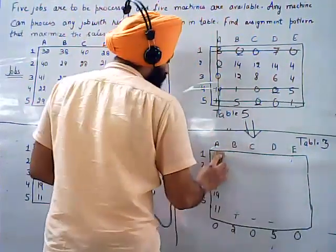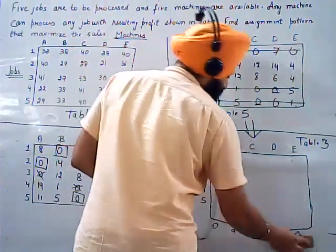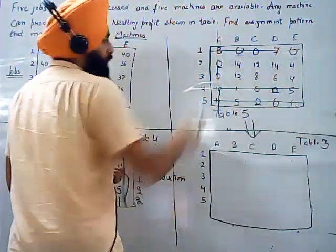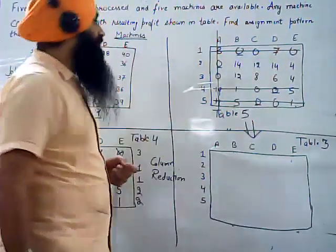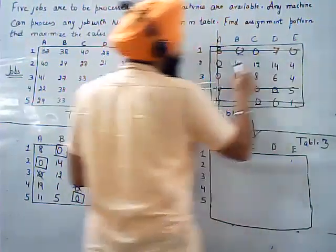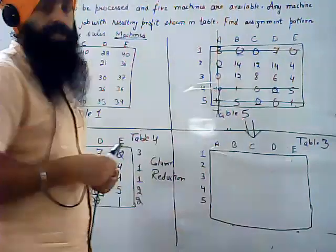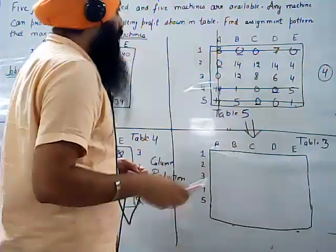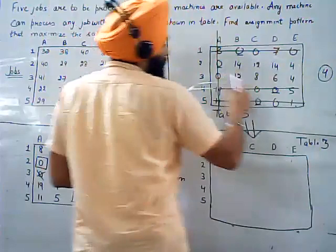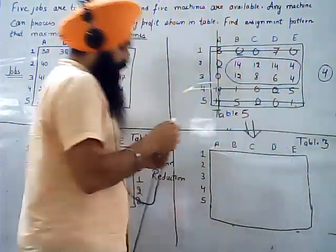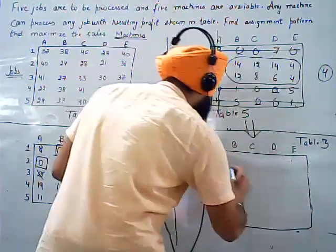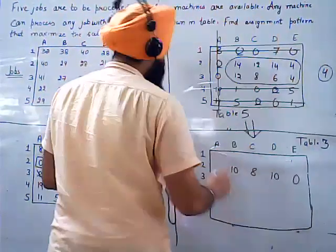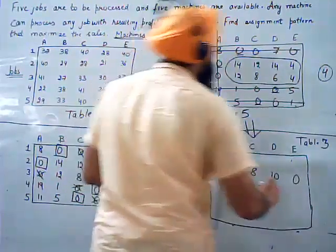The elements connected by lines are the covered elements; the remaining are unconnected elements. We find the minimum value from the unconnected elements, which is 4. We subtract 4 from all unconnected elements: 14 minus 4 is 10, 12 minus 4 is 8, 14 minus 4 is 10, 4 minus 4 is 0, 12 minus 4 is 8, 8 minus 4 is 4, 6 minus 4 is 2.